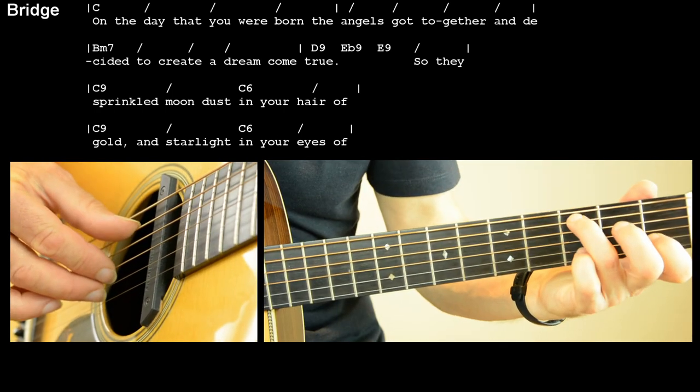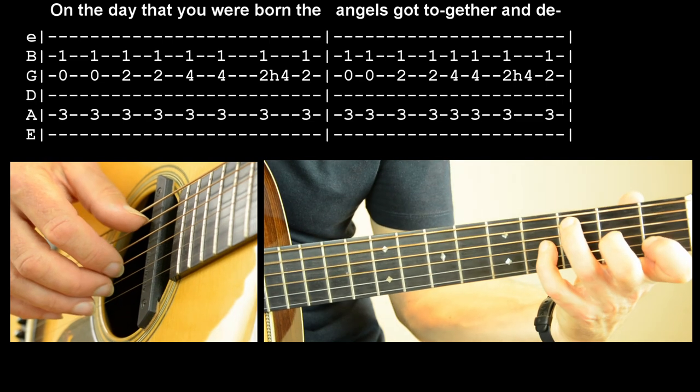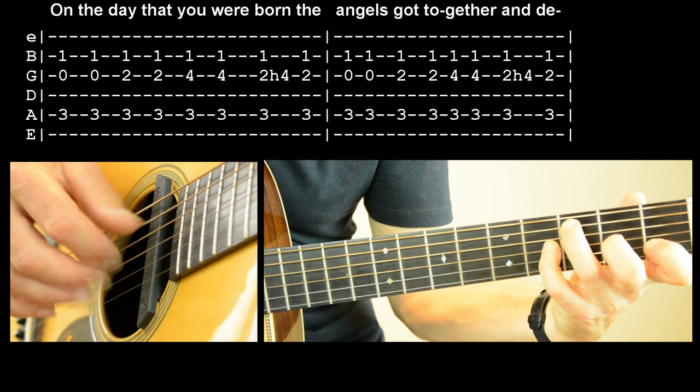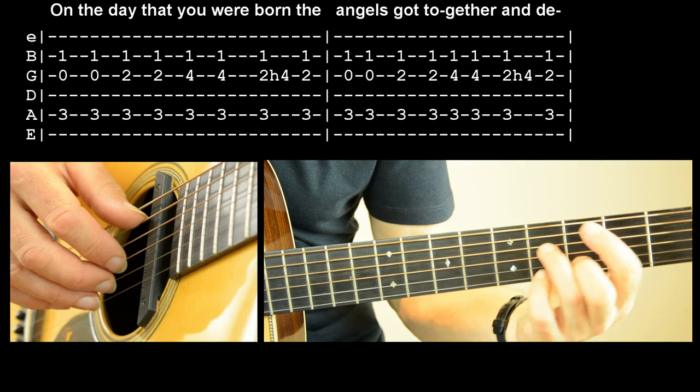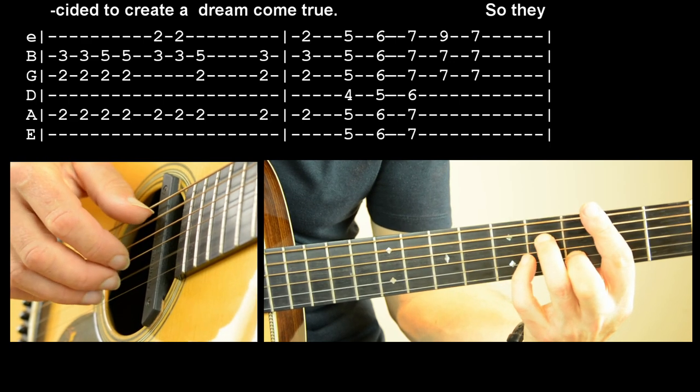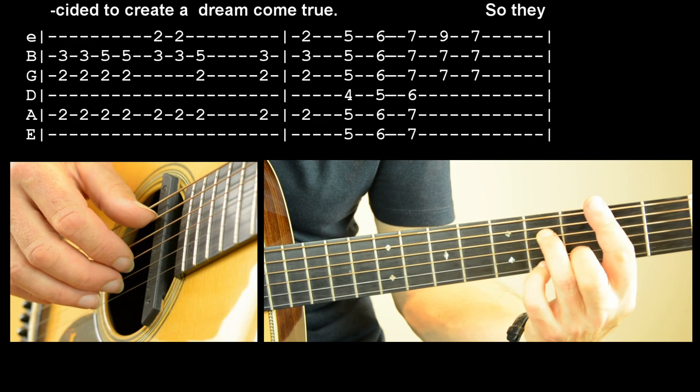So you're picking these three strings then we move to a B minor shape so we do hit the top string on this on the B minor seventh one.